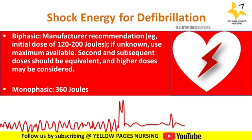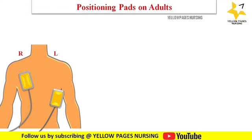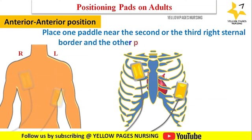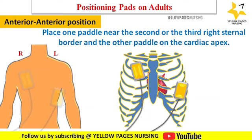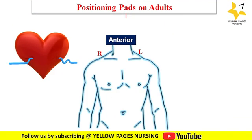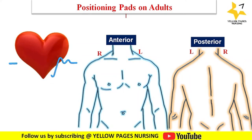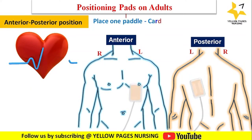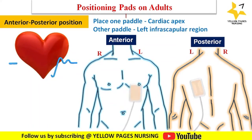For positioning pads on adults, the first method is anterior-to-anterior position: place one paddle near the second or third right sternal border and the other paddle on the cardiac apex. The second method is anterior-to-posterior position, where one paddle is placed on the cardiac apex and the other on the left infrascapular region.